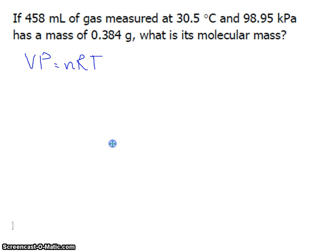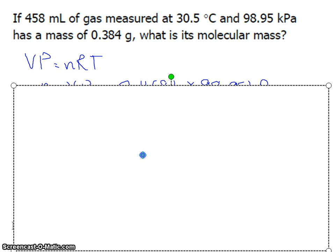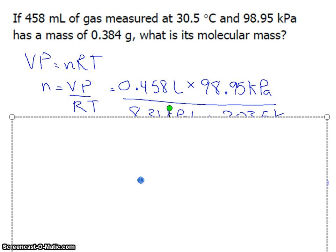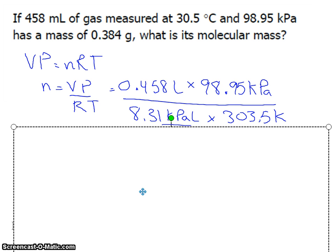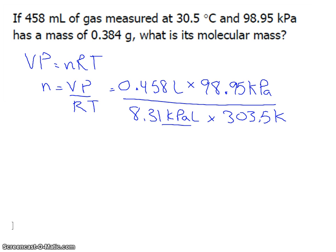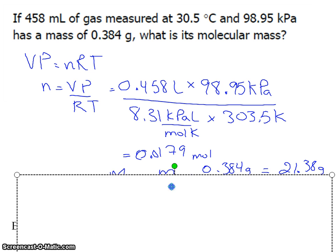This is what I solved in class. We're going to use the ideal gas law. I know to find molar mass, I have to find moles first. That's the only way to connect up with molar mass. So I substitute VP equals nRT. The number of moles is equal to VP divided by RT. Substitute the values in, and I get 0.0179 moles.